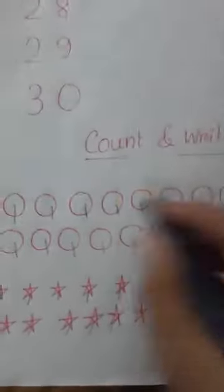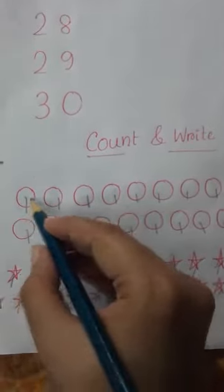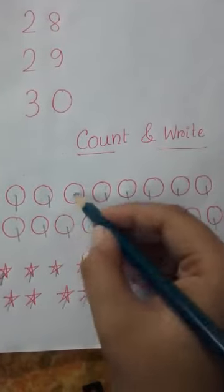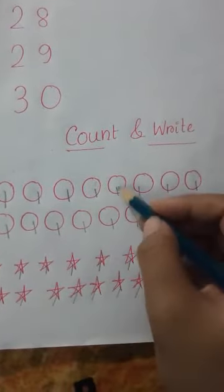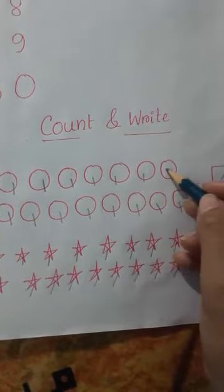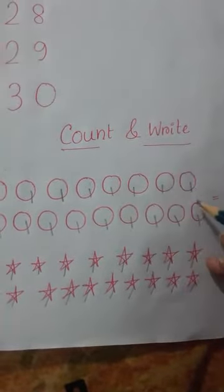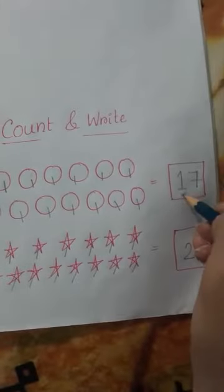Next is count and write. Let's count all the circles. 1, 2, 3, 4, 5, 6, 7, 8, 9, 10, 11, 12, 13, 14, 15, 16, 17. There are 17 circles. 1, 7, 17.